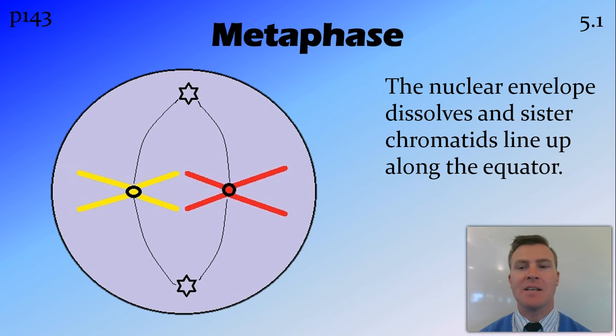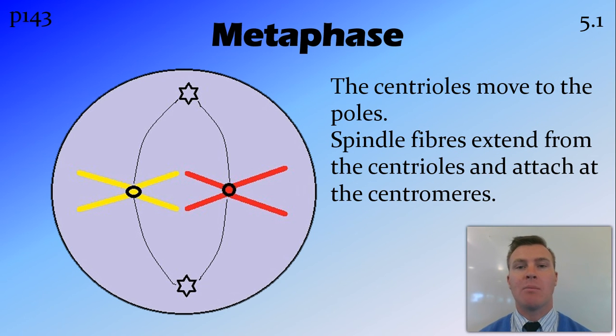We then have metaphase, where the nuclear envelope dissolves and those sister chromatids line up across the equator. The other thing that happens during metaphase is the centrioles move to the poles. Usually they're found together, but they split up and one goes to each pole. And spindle fibers are created from those centrioles that extend through the cytoplasm and attach to the centromeres on each one of those chromosomes.